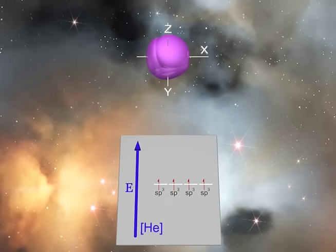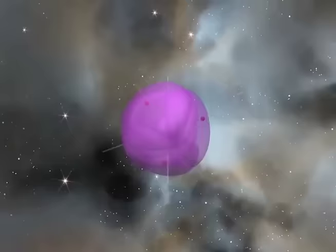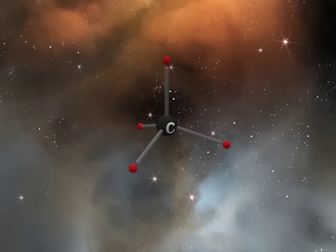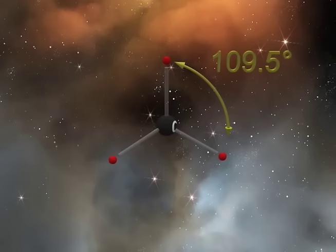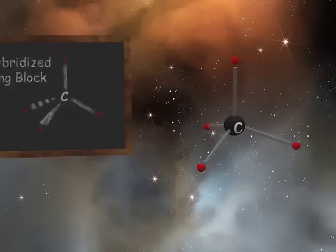When we superimpose all four sp3 hybrid orbitals onto the carbon atom, it becomes quite cumbersome and confusing. Thus, we simply show how the electrons in the hybrid orbitals are oriented in three dimensions. The four new hybrid orbitals attempt to get as far apart from each other as possible, 109.5 degrees. Think of this as the orbitals attempting to minimize repulsions between them. Thus, they are oriented towards the corners of a tetrahedron with all angles at 109.5 degrees. Your instructor will often draw the sp3 hybridized carbon on the blackboard as shown. The two solid lines are in the plane of the board, the wedge represents the electron coming out of the plane, and the dashed line represents the electron going back behind the plane of the board.